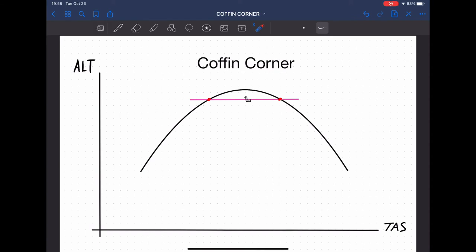There are two speeds associated with Coffin Corner. One is your low-speed mop buffet, the other is the high-speed mop buffet. I'm going to start talking about the high-speed right now.